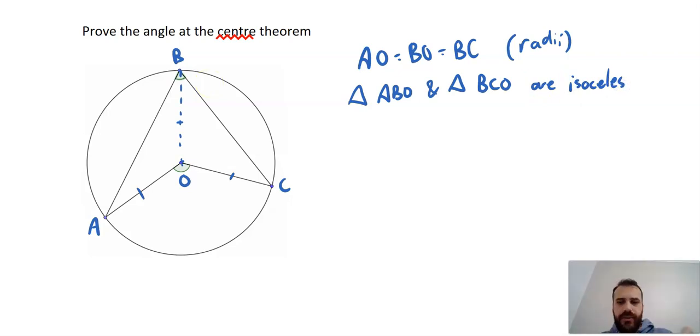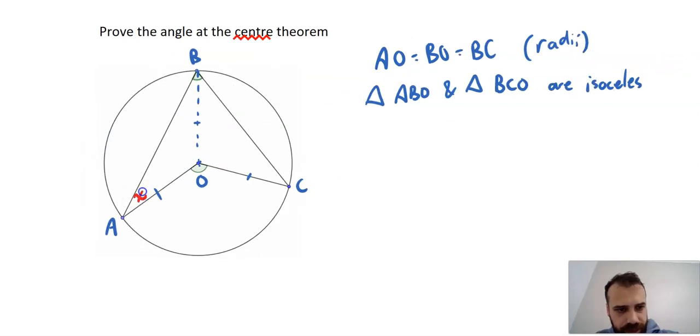Now I'm going to label angles. This X and this X are equal, and I can label this one as Y and this one as Y. Technically, I should write down that X equals X. For angle ABO - if you want this angle here, you say AB, get to the center of it, and then go out again.